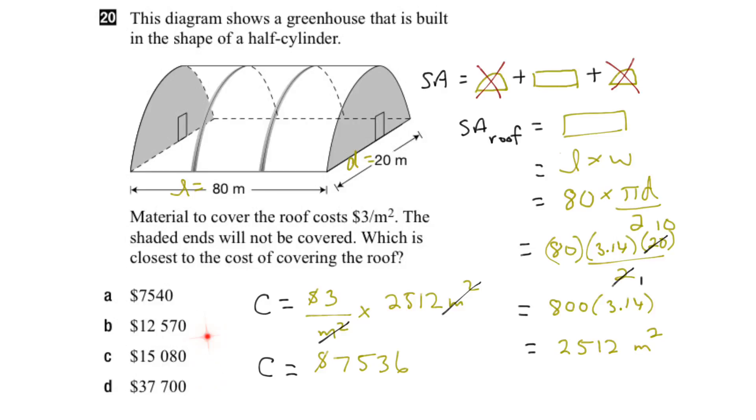So if we look down our list of options, the closest value is A.